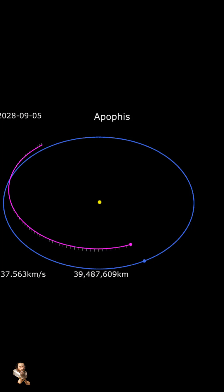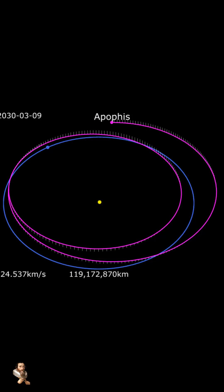Asteroids have long been the subject of fascination and fear. Among them, 99942 Apophis, also known as the God of Chaos, stands out due to its potential threat to our planet.